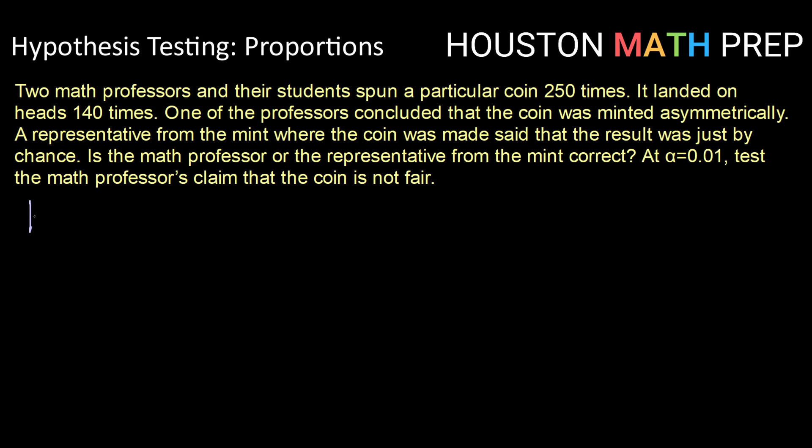Alright, so writing a set of hypothesis statements. Now here we have to know what do they mean by the coin is or is not fair. Well, a fair coin should land on heads about half the time or its percentage of heads should be 0.5. That's what it means for a coin to be fair.